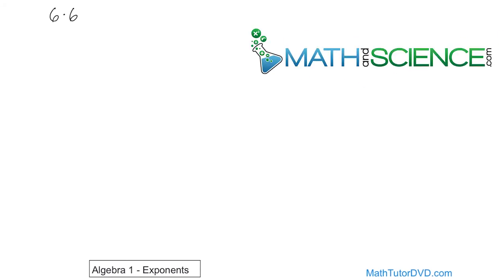6 times 6. So this is a special case. You're doing multiplication of two numbers, 6 times 6, but the numbers that you're multiplying together are the same number. So 6 is multiplied by itself two times. So the way that you write that down as an exponent is the number 6 raised to the power of 2.